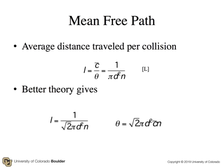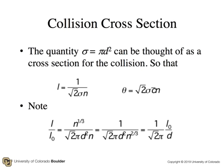Now, it turns out that better theory, collision theory, throws in a square root of 2. So that the mean free path is 1 over the square root of 2 pi d squared times n. And the collision frequency is the square root of 2 pi d squared c bar n.